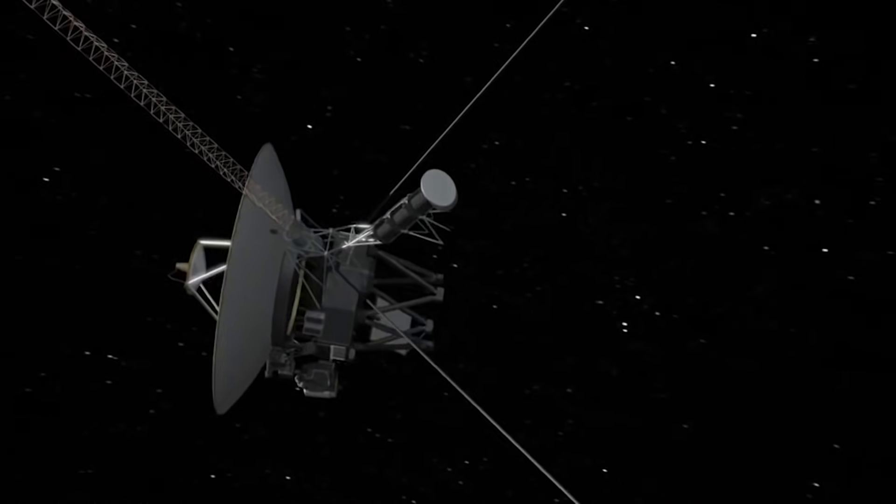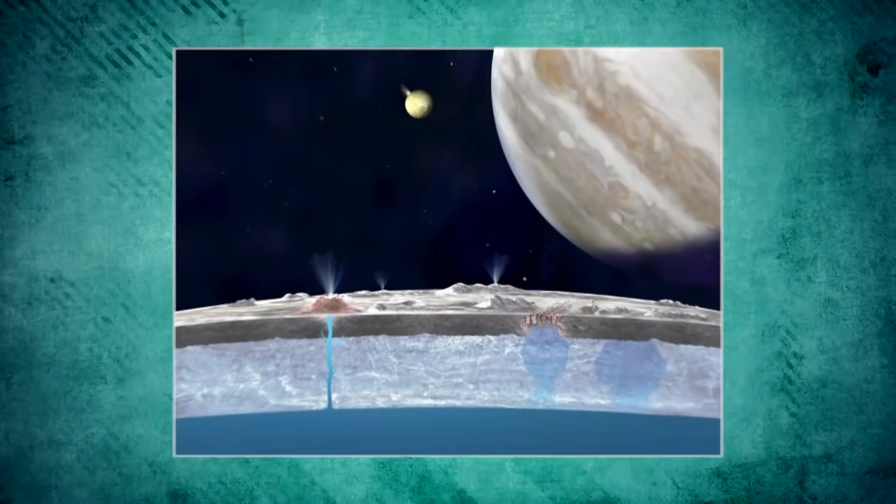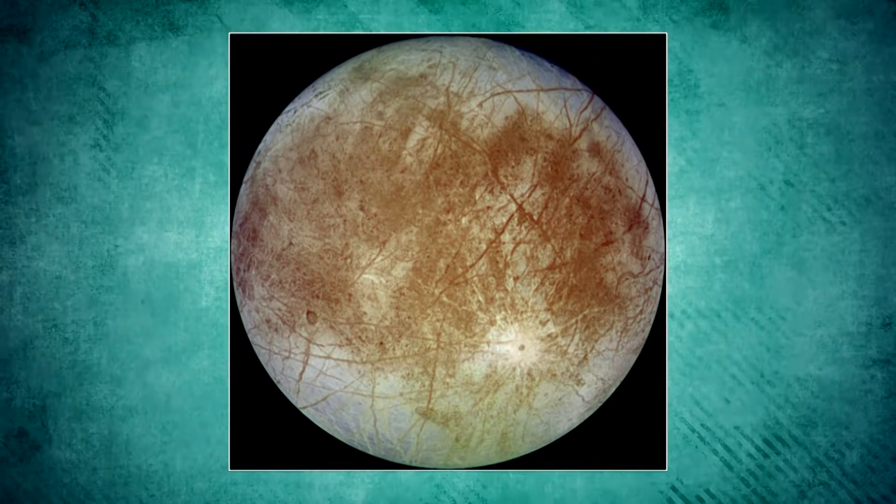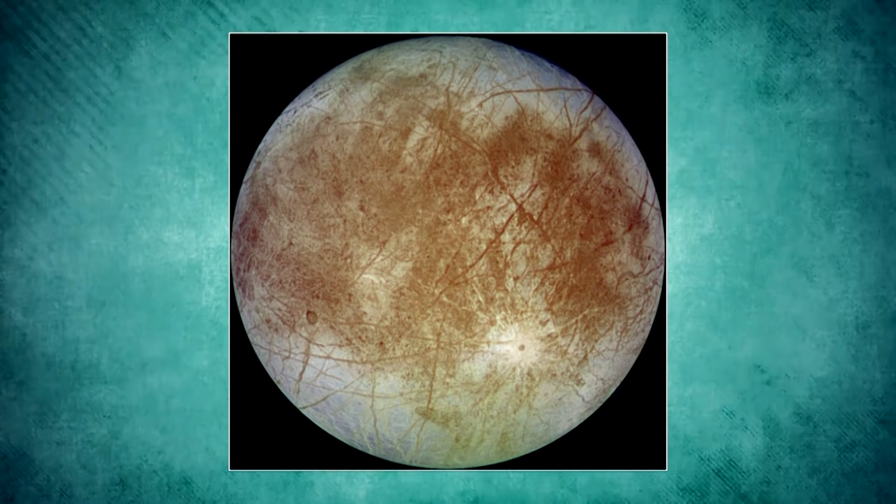In 1979, Voyager 2 was very close to Jupiter and let scientists obtain indirect data on the existence of a liquid ocean under the surface of its moon, Europa.